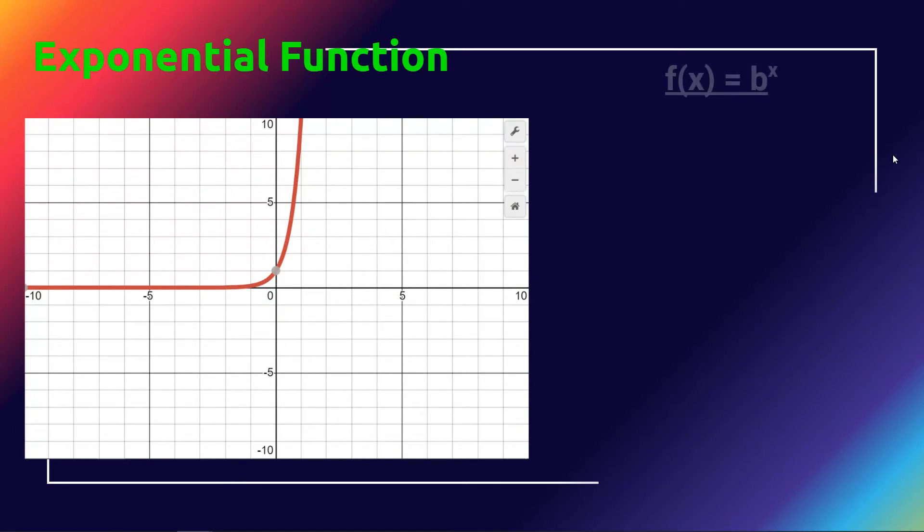For the exponential function, the parent function is f(x) = b^x. Little b means base, and base for our purposes is going to be either 2, 10, or the letter e, which means a specific number similar to pi.